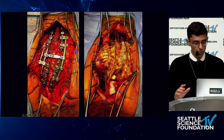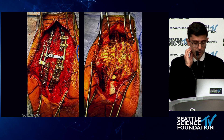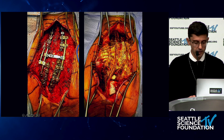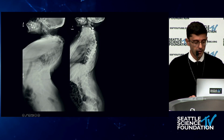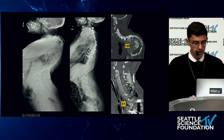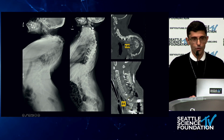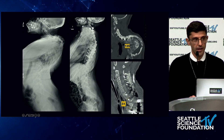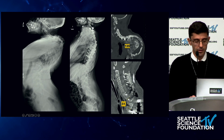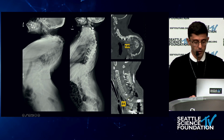Coronally we straightened her out quite nicely. In the sagittal plane we improved the kyphosis to about 50 degrees. She had a rocky course with her respiratory status but overall is doing quite well.